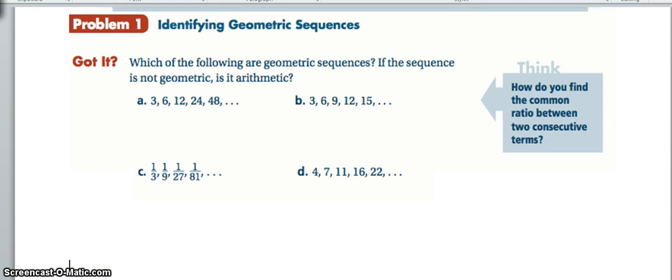Please make sure you've worked through the Pearson module to make it to this point, to the got it. Try these on your own. See if there's a common ratio. If it's a common ratio of multiplication, that makes it geometric. If it's a common ratio of addition or subtraction, that makes it arithmetic. And if it's neither, then it's just not a geometric or arithmetic sequence.